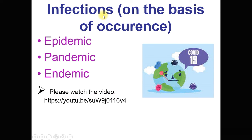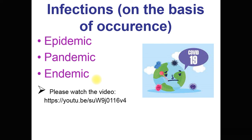Infections can also be classified by their occurrence as outbreaks: epidemic, pandemic, and endemic. Epidemic means sudden appearance of large numbers of cases in a particular location in a short time. Pandemic is an epidemic seen simultaneously at different geographical locations, in different countries and continents — COVID-19 is an example. Endemic infections are those where a small number of cases are always present. There is a detailed video on epidemic, pandemic, and endemic linked in the description box.